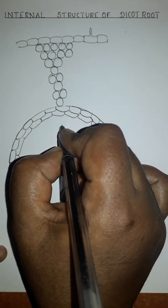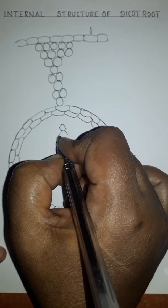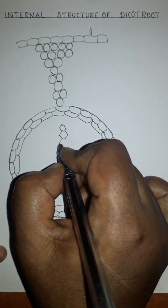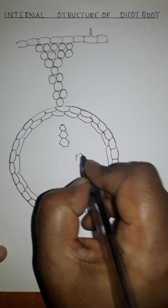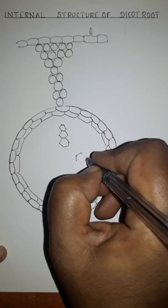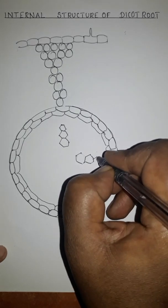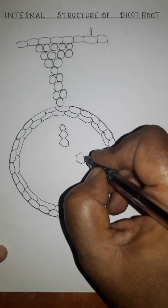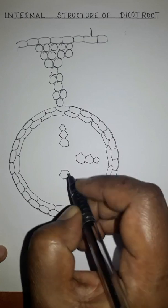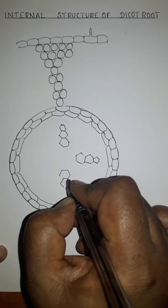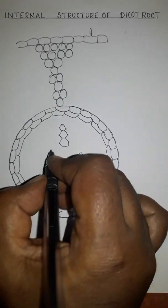Now we will see the xylem. Xylem cells are hexagonal or polygonal in shape. In four directions we will make four xylem bundles. The bigger xylem we draw is called metaxylem, and the smaller one is protoxylem. The protoxylem is facing the periphery, so the type of xylem is exarch in nature.